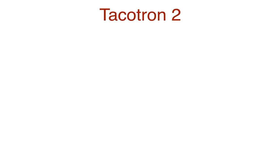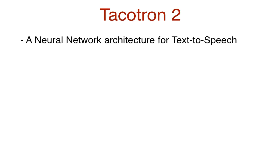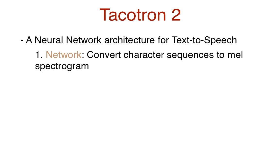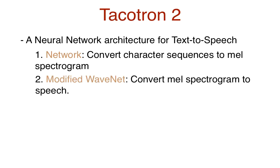Last month Google released a paper on Tacotron 2, a neural network architecture for text-to-speech synthesis. It consists of two components: a network to convert character sequences into MEL spectrograms, and a modified version of WaveNet which acts as a vocoder to synthesize the speech.